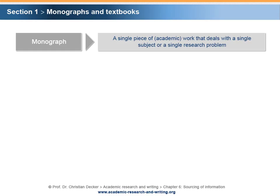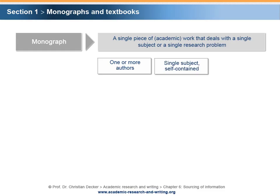A monograph is a single piece of academic work that deals with a single subject or a single research problem. In the context of academic research, scientific or scholarly monographs are relevant. Typically, there is one author who has written the monograph. In some cases, two or more authors have written the monograph in cooperation. Still, the monograph would deal with a single subject and would be self-contained.